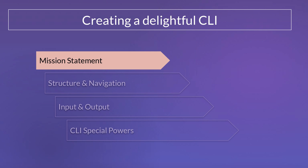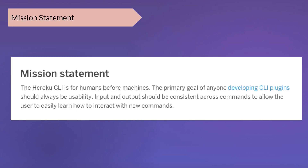First, mission statements. We believe every CLI should have a mission statement of what you're trying to do with that CLI. This can really help guide you as you make design decisions, because you have a framework to point to. For us, the Heroku CLI is all about usability and humans before machines — meaning that while we want a base level of machine compatibility, when making a design decision we'll optimize for the human experience. We try to make input and output as consistent as possible so users can easily learn how to interact with new commands.